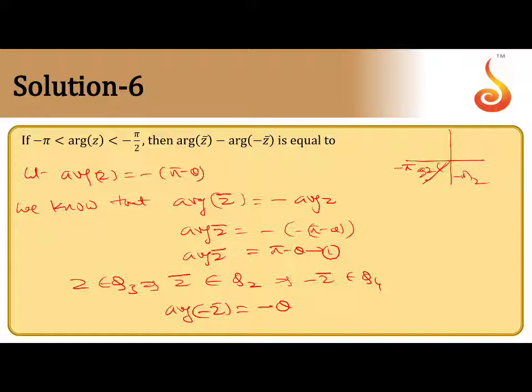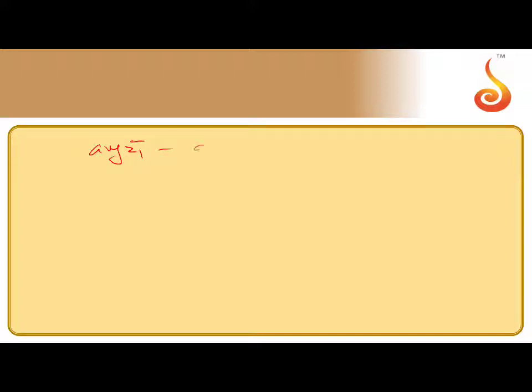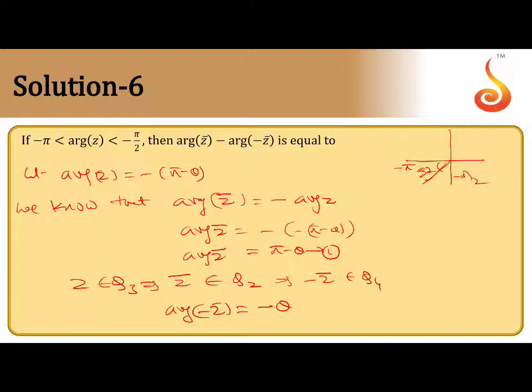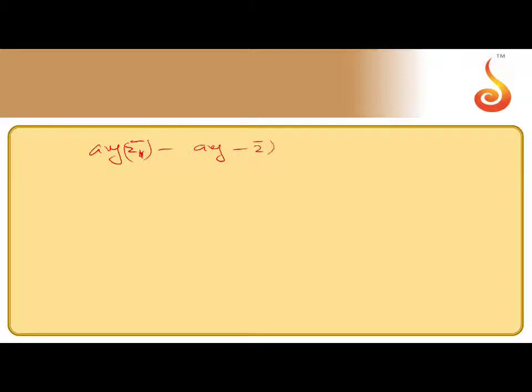Here θ is the principal value. arg(z̄) = π - θ and arg(-z̄) = -θ. They are asking for arg(z̄) minus half of arg(-z̄), which gives (π - θ) - ½(-θ) = π - θ + θ/2... simplifying, arg(z̄) minus arg(-z̄) = (π - θ) - (-θ) = π. So the answer is π.